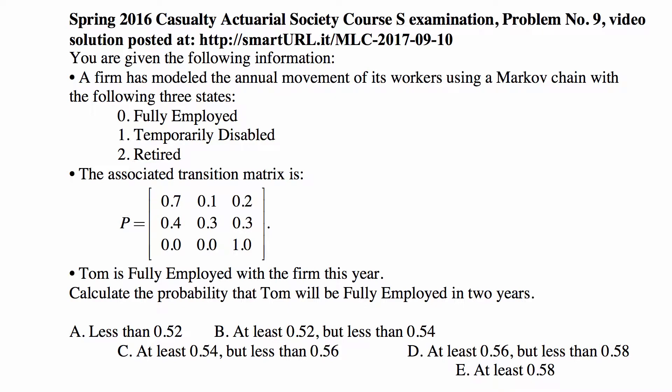Tom is fully employed with the firm this year. Calculate the probability that Tom will be fully employed in two years. The five answer choices are in the style of the Casualty Actuarial Society — they are ranges of numbers rather than specific values, which makes guessing more difficult, though minor arithmetic mistakes don't cost as much. It's a pretty good design.